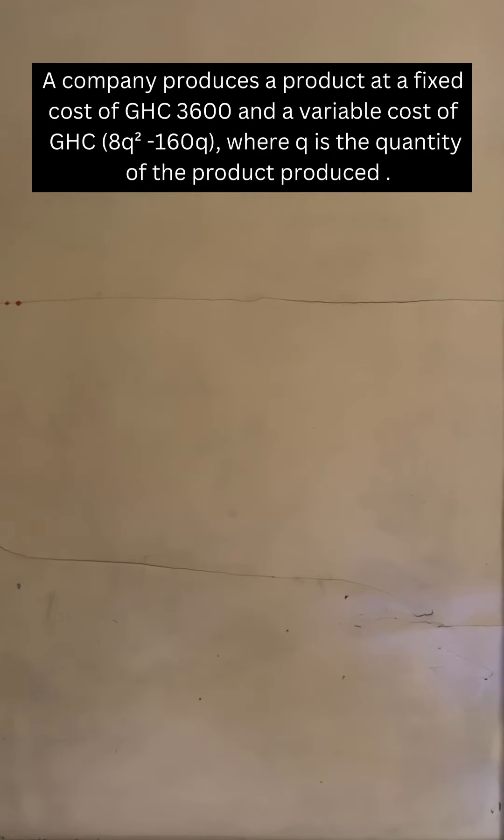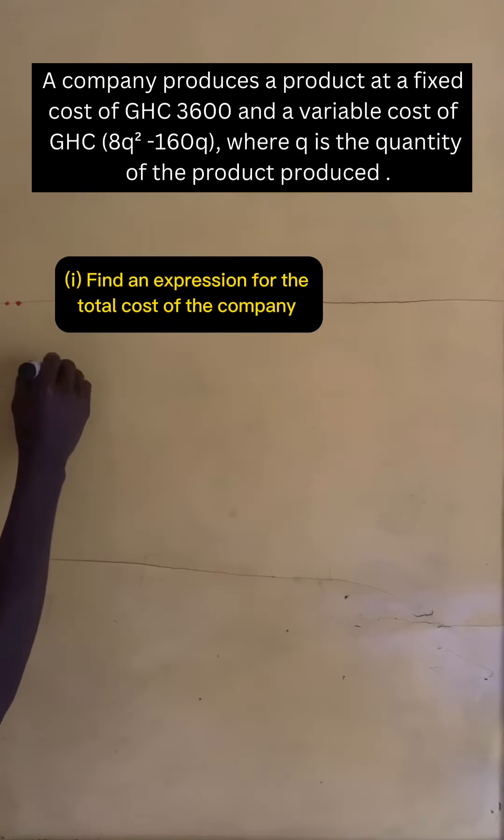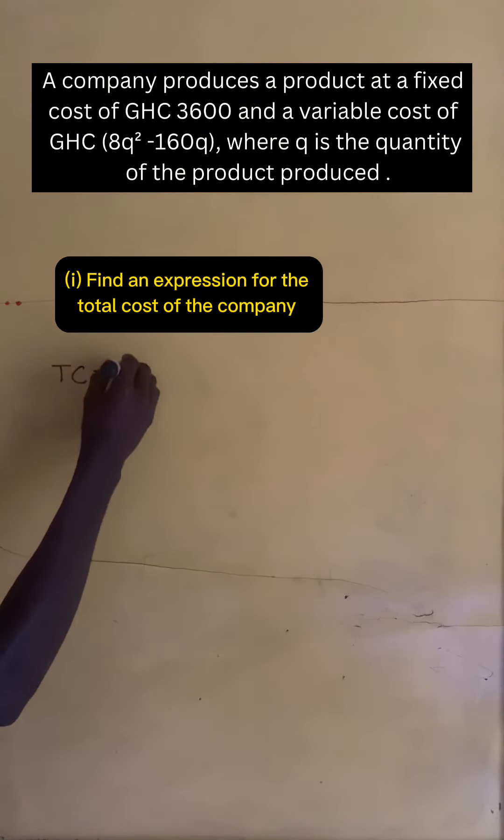A company produces a product at a fixed cost of GHC 3600 and a variable cost of GHC (8q² - 160q), where q is the quantity of the product produced. Find an expression for the total cost of the company.